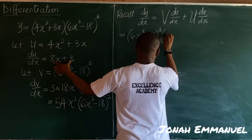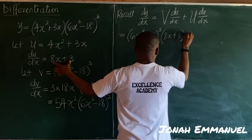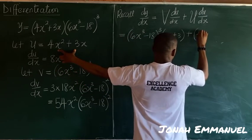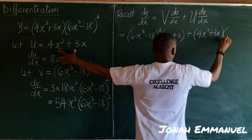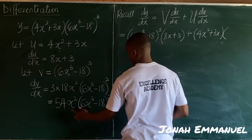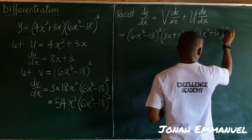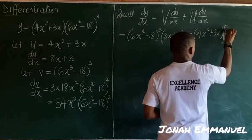Plus u, u is this 4x squared plus 3x, into dv/dx. So this is my value for dv/dx which is 54x squared into 6x cubed minus 18 all squared.